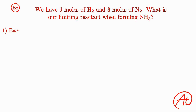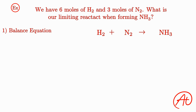The first thing you'll want to do with problems like this is always write down your balanced chemical equation. For this problem, we have H2 and N2 as our reactants and NH3 as our product. On the left we can see there are 2 hydrogens, and on the right there are 3. To balance this, we put a 3 next to the diatomic hydrogen and 2 next to the ammonia, giving us 6 hydrogens on both sides. We then see that we have 2 nitrogens on each side, so we're all set.